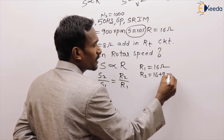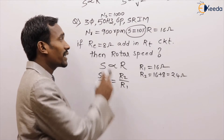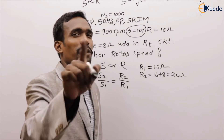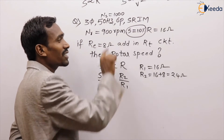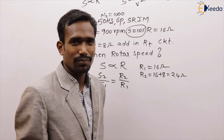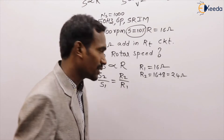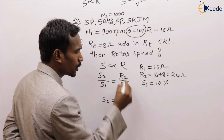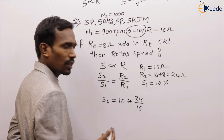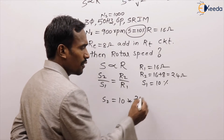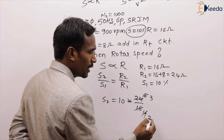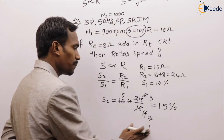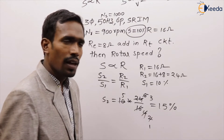R1 equals 16 ohms. R2 equals 16 plus 8, which is 24 ohms — the extra 8 ohms added. Do not take R2 as just 8 ohms; if you do, you will get the wrong answer (option A). R2 must be 16 plus 8 equals 24 ohms. This is a common mistake. So s2 equals 10% multiplied by 24 divided by 16, giving s2 equals 15%.